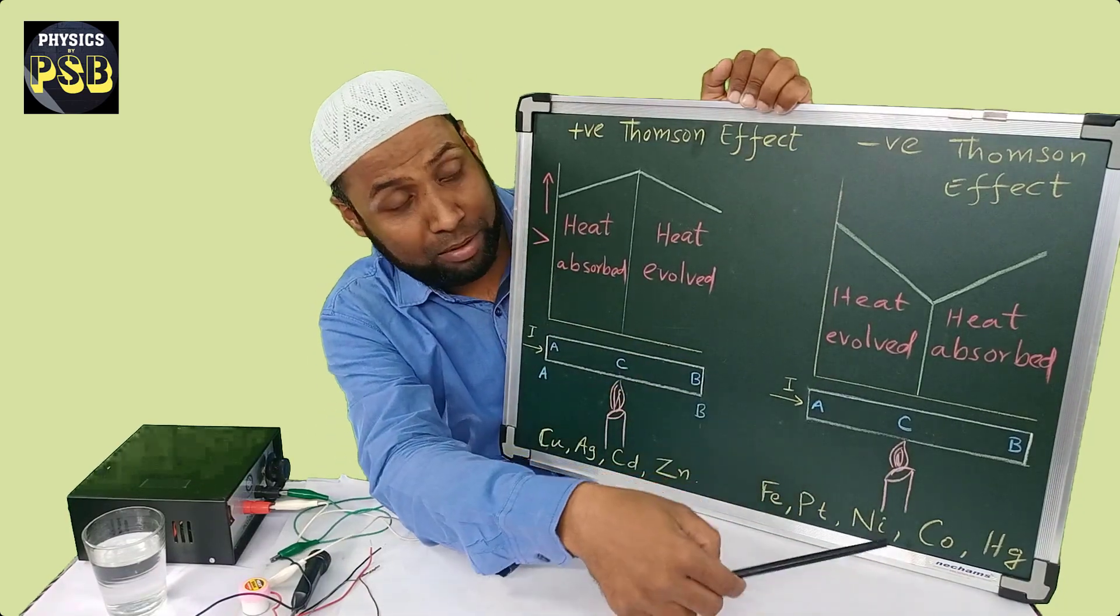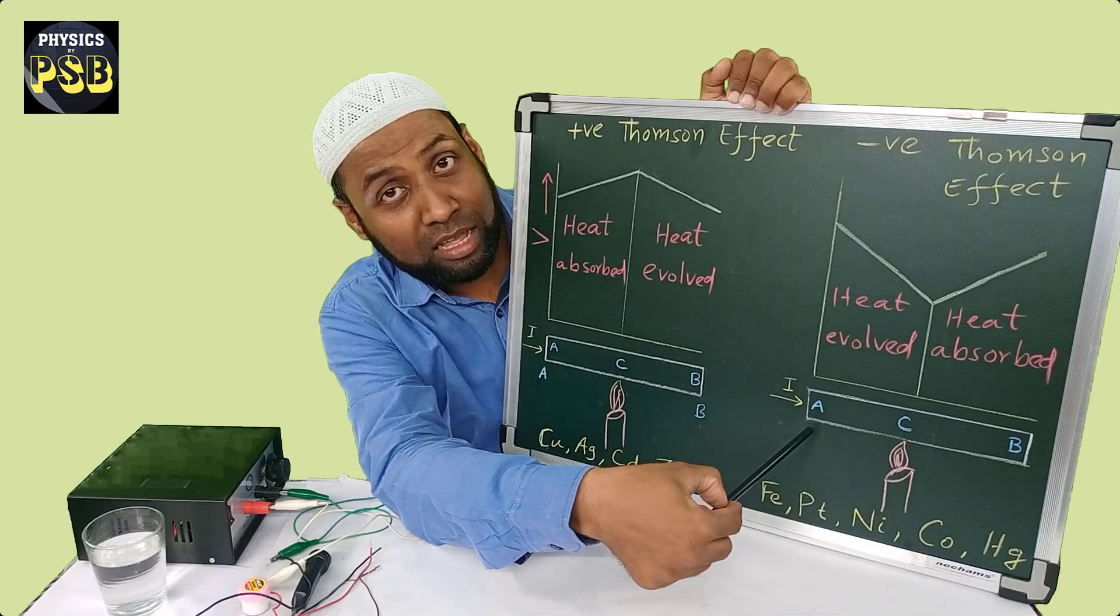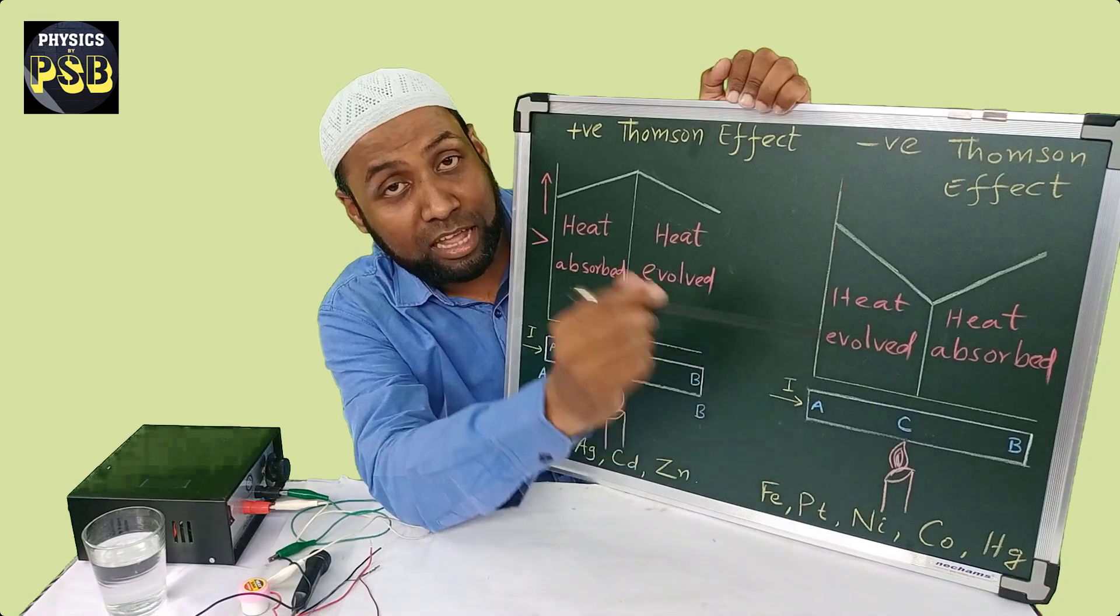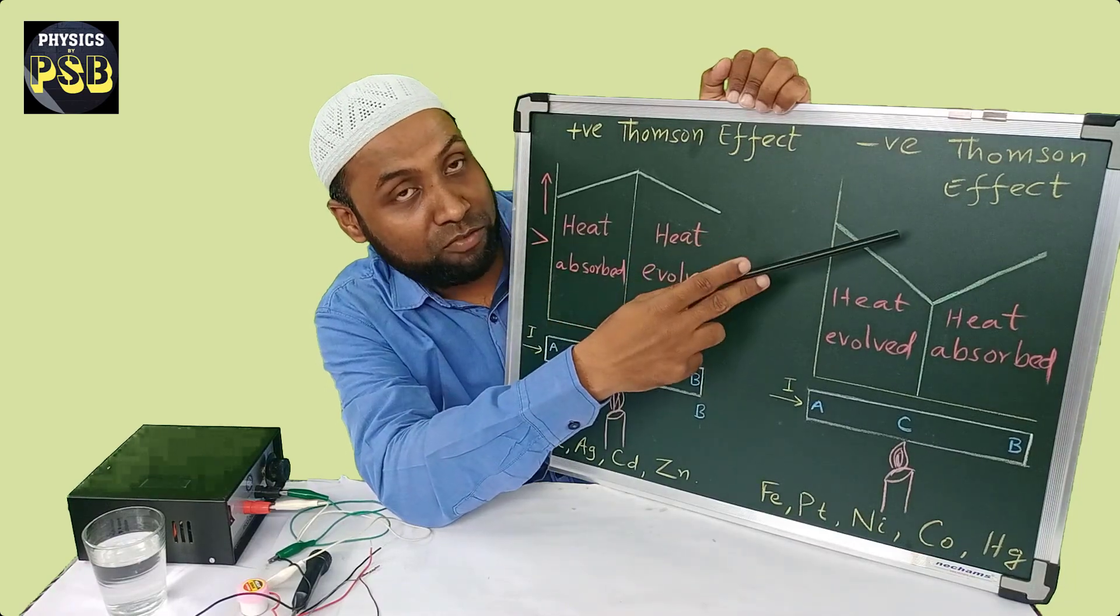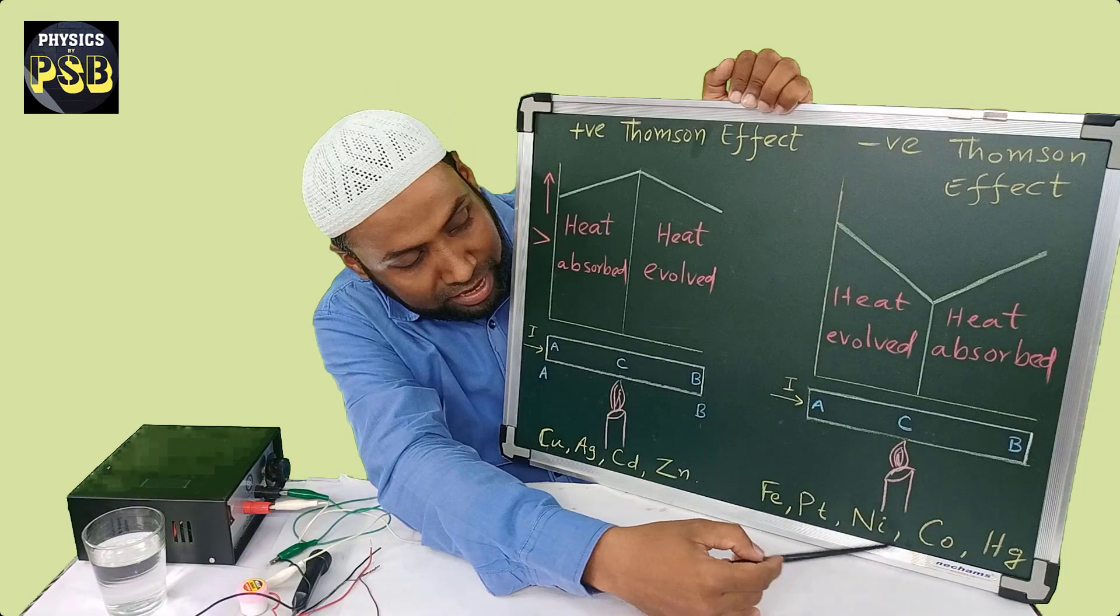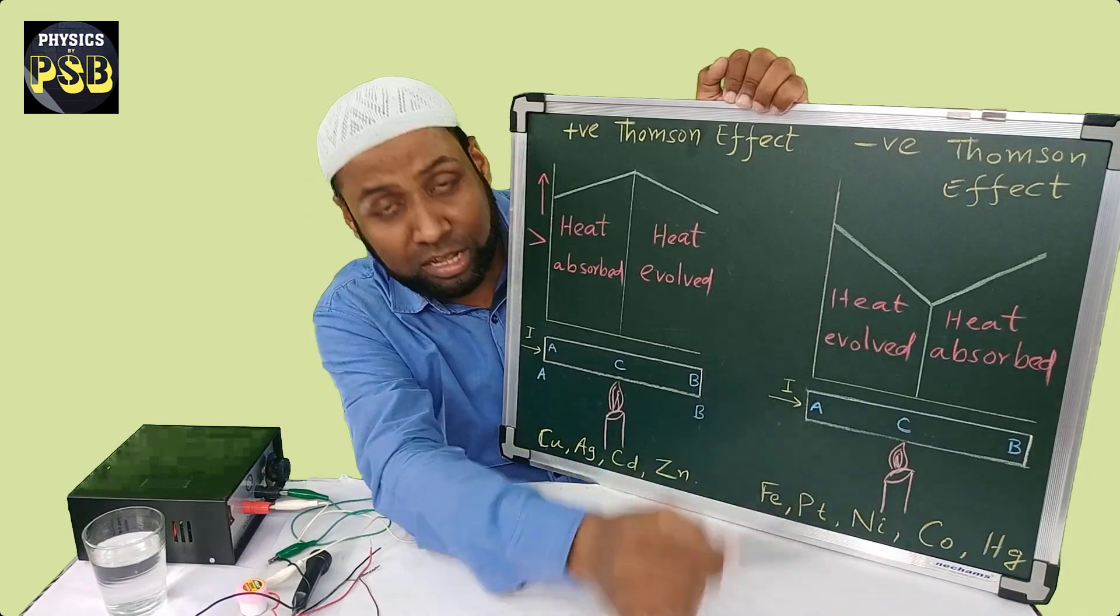If the reverse thing happens, if the temperature reduces along the direction of current, then the phenomena is referred as negative Thomson effect. It is observed in iron, platinum, nickel and cobalt and also in mercury.